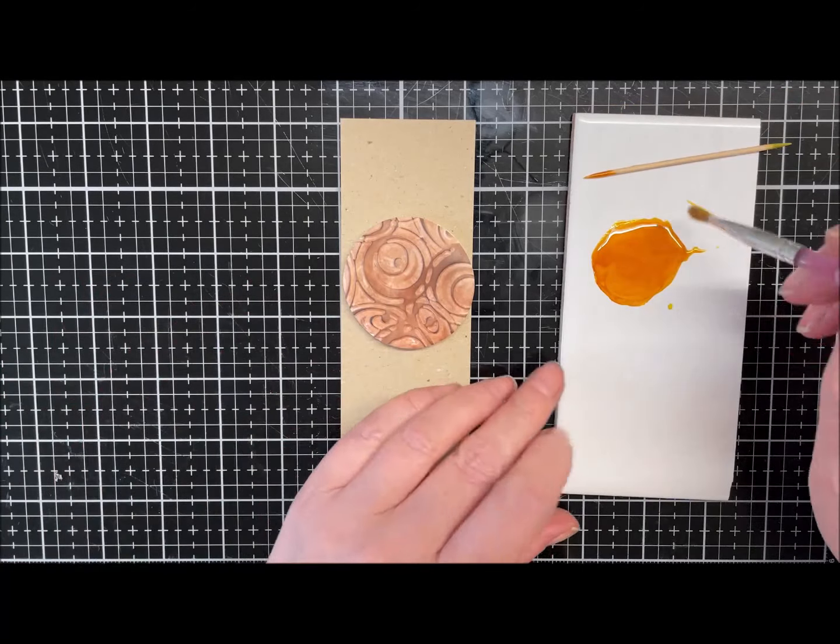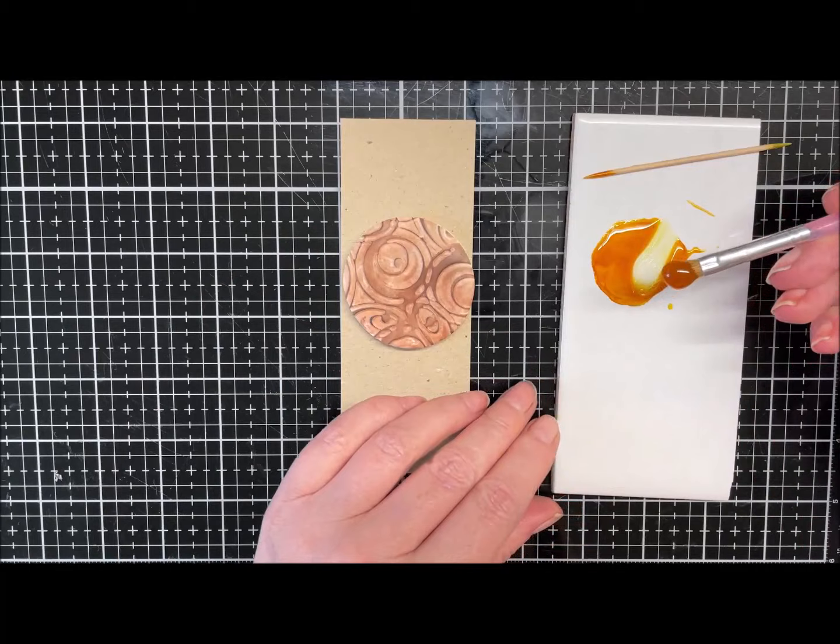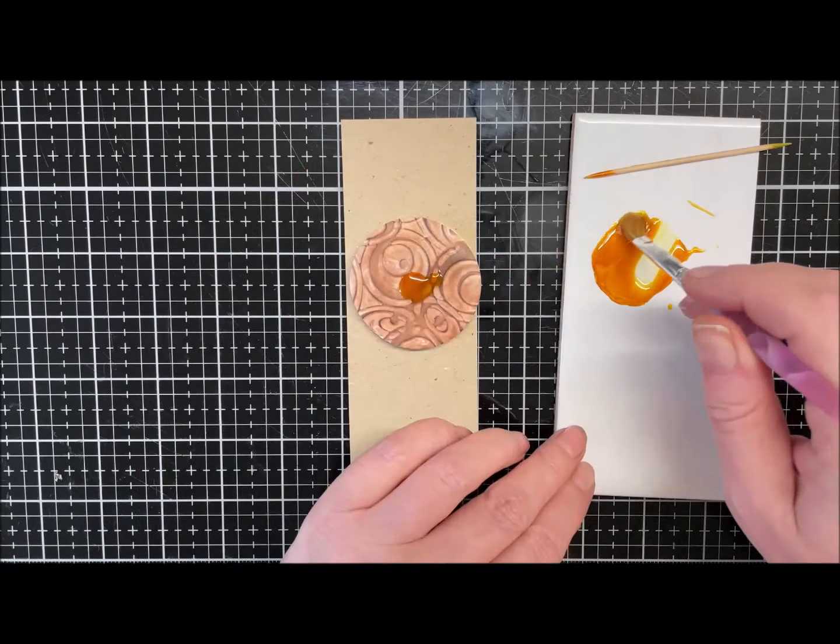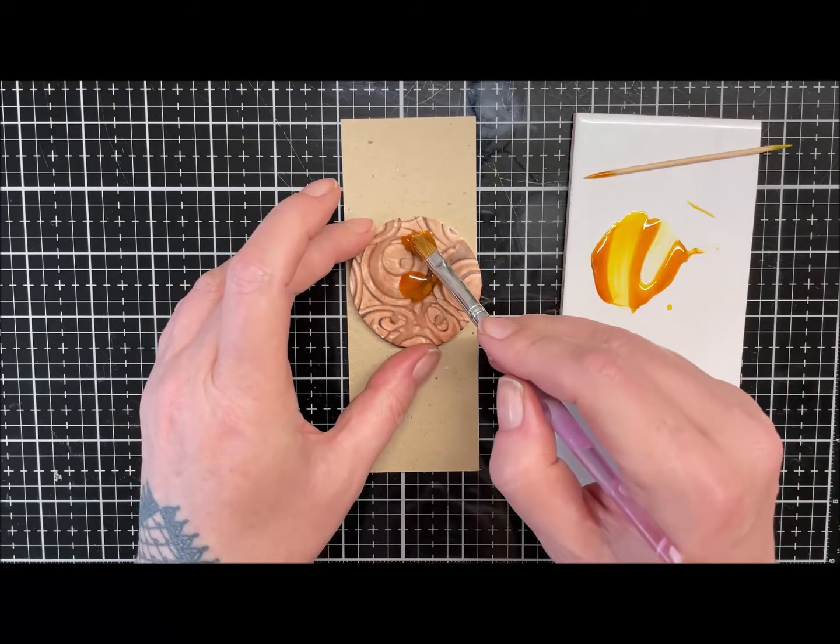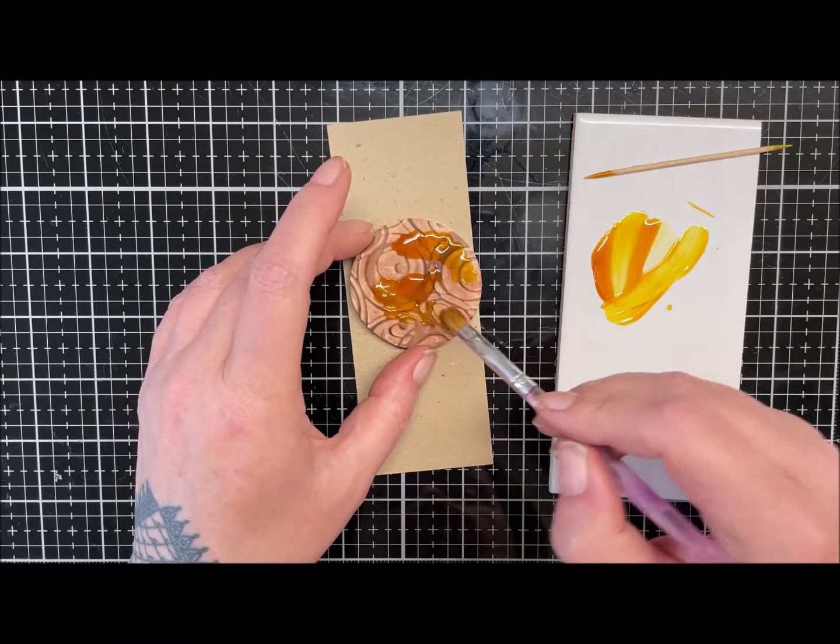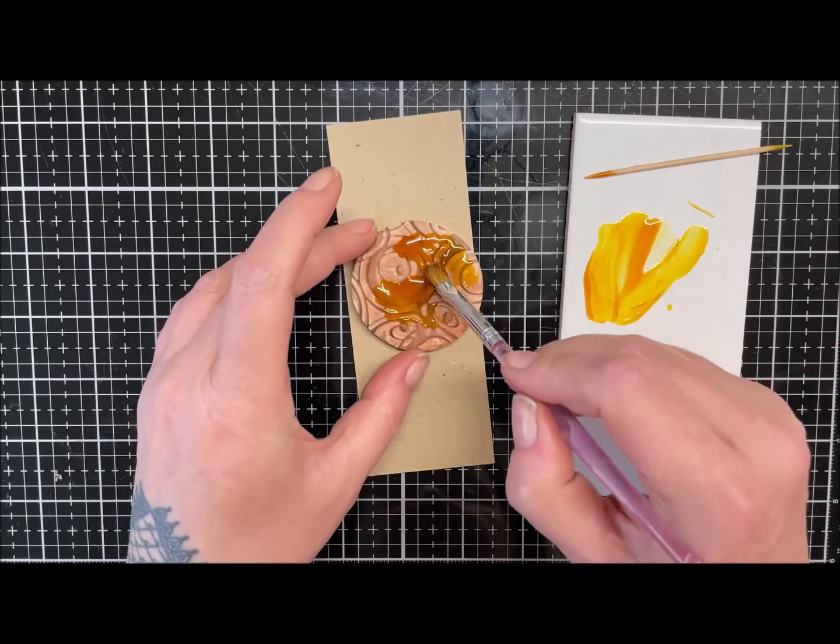And again, just using a paintbrush, I'm just going to pick some up and start applying it to my pendant.